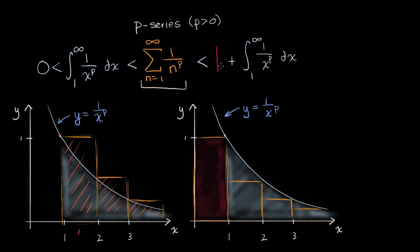But if we add one to the area under the curve — so now we're not just talking about the white area, we're also talking about this red area — well, then our p-series is going to be less than that. Because the first term of our p-series is equal to one, and then all of the other terms you can view as a lower Riemann approximation of the curve. They fit under the curve and leave some area, so this is going to be less than that expression.